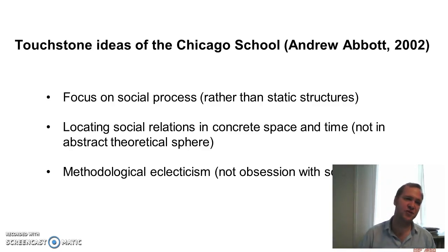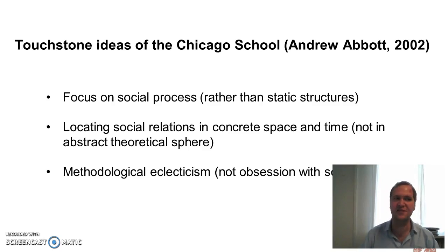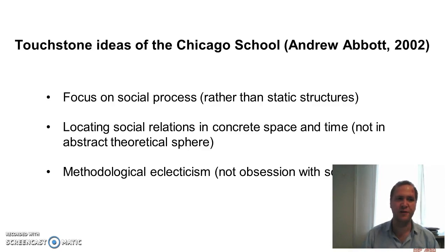Now, it may seem strange to be speaking about the Chicago School, given that 80 years has passed. And indeed, as Jackson also points out, the school and its view of the city in terms of human ecological metaphors has come under strong attacks many times since, not least from neo-Marxists such as Manuel Castells and David Harvey in the 1960s and 1970s. However, as sociologist Andrew Abbott has recently pointed out, the Chicago School remains good to think with, due to its important touchstone ideas: a focus on social process rather than on static structures, an insistence on the location of social relations in concrete space and time, not in some abstract theoretical sphere, and a methodological eclecticism driven more by insatiable curiosity than by obsessions with scientificity.